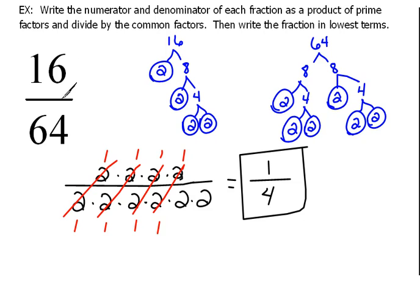Now if you knew starting out that 16 goes into 64 four times, then we could have just divided. 16 divided by 16 is 1, and 64 divided by 16 is 4, and we would have gotten the same answer. But if you didn't know that, this is a nice way to look at it.